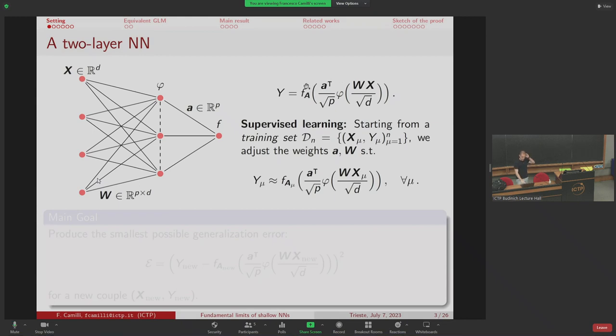We have a projection onto a one-dimensional space through this vector A, and finally we apply this function F, this readout that can be stochastic, with capital A as a subscript which can be a random variable to model some stochasticity.